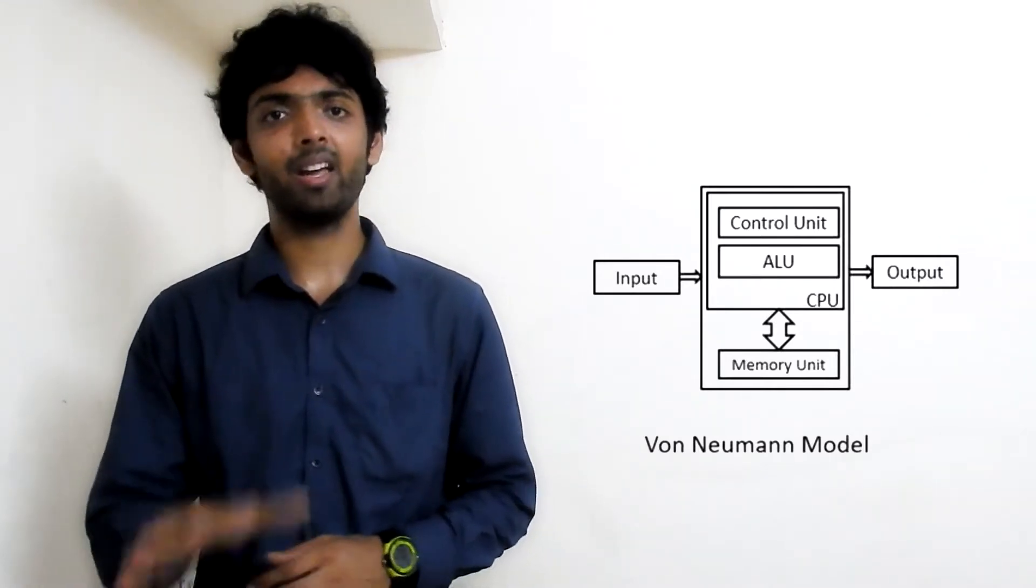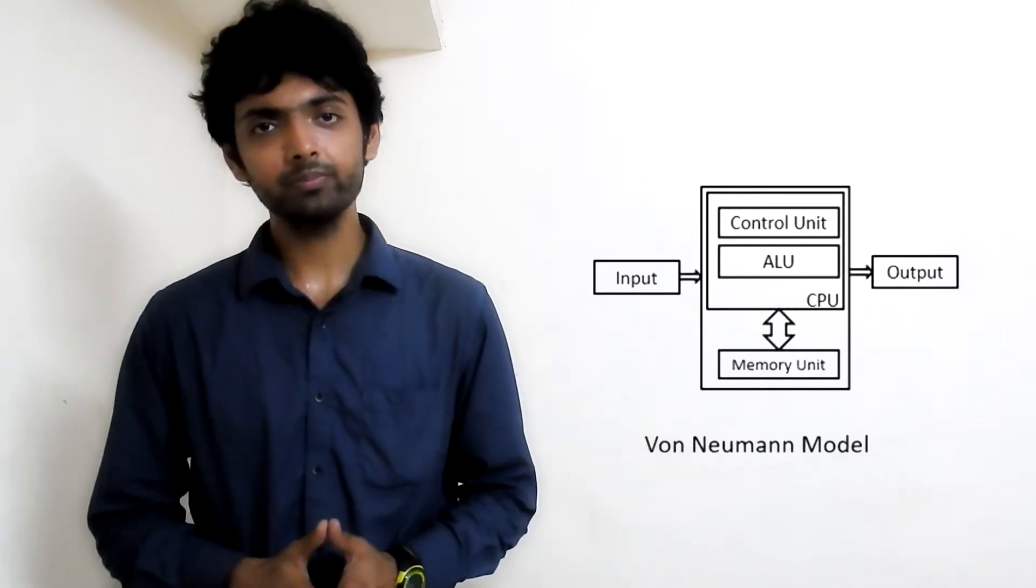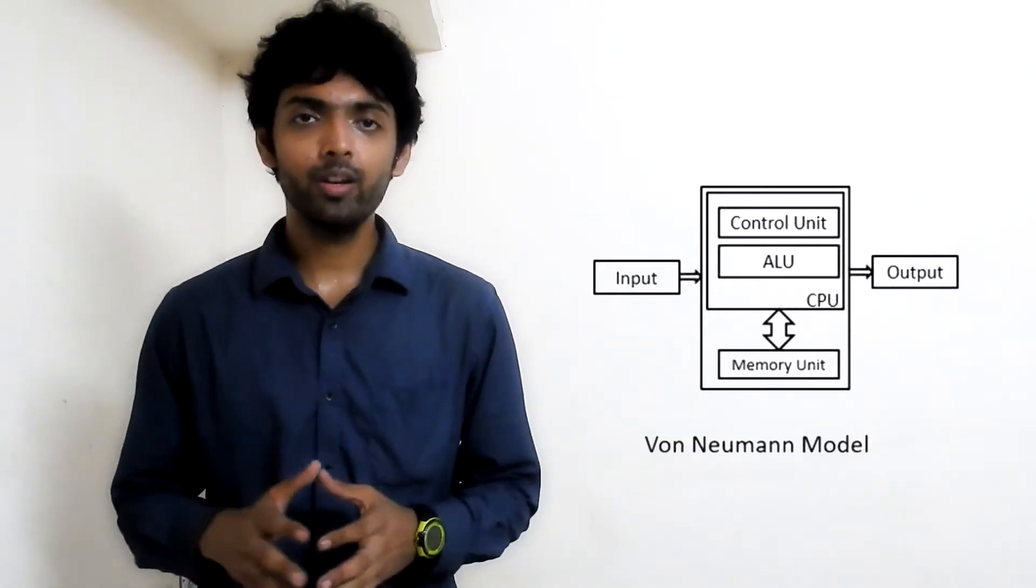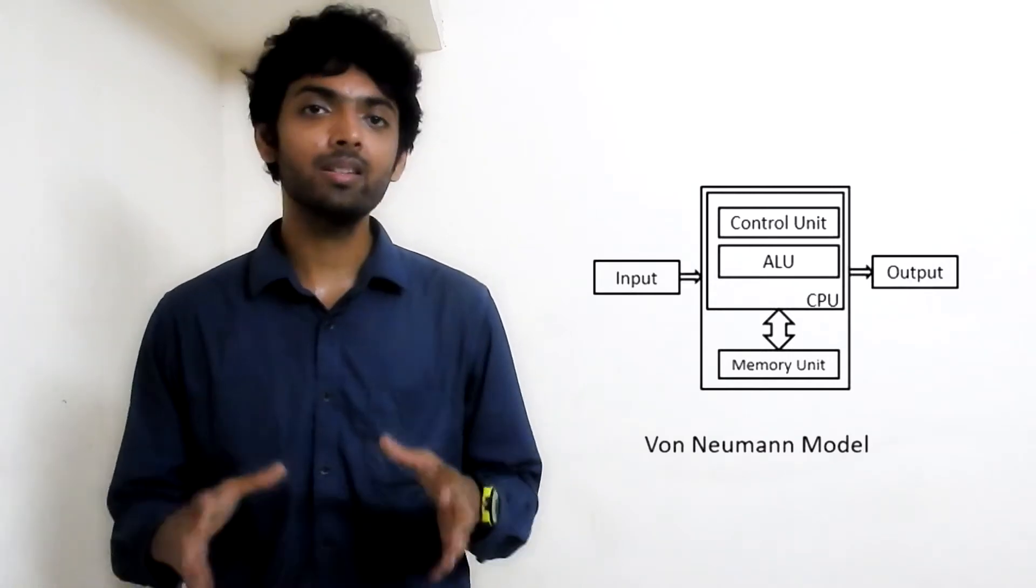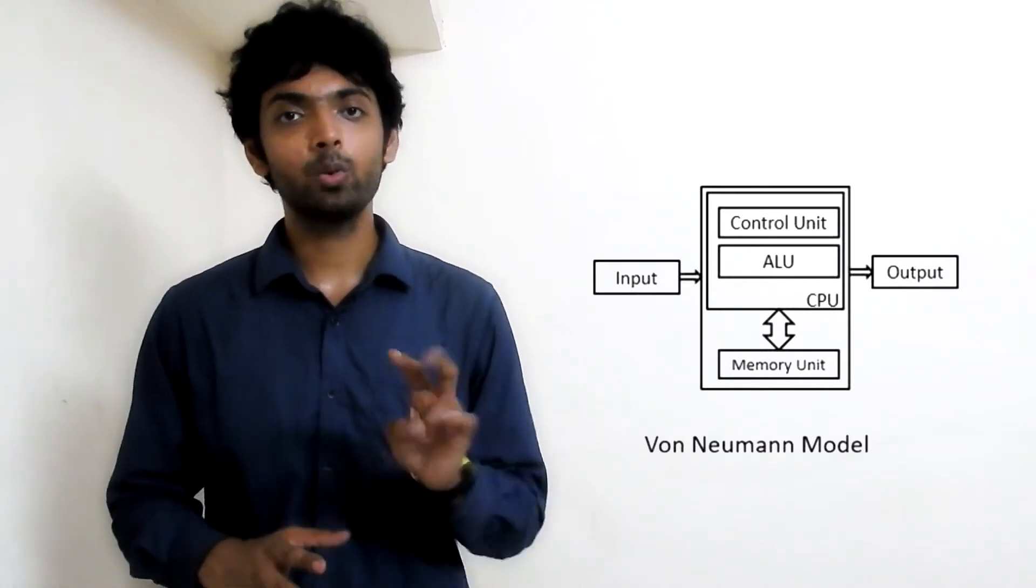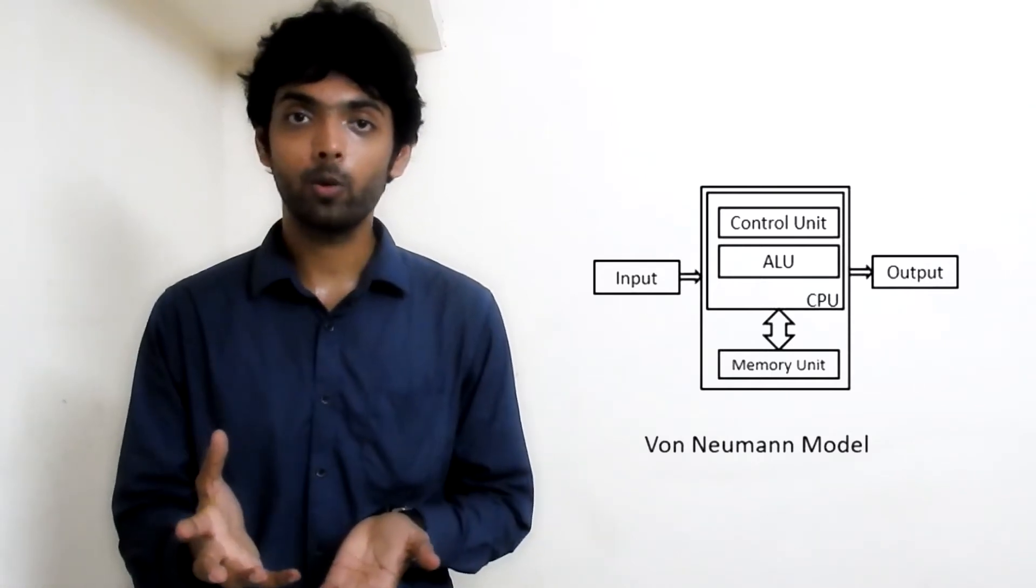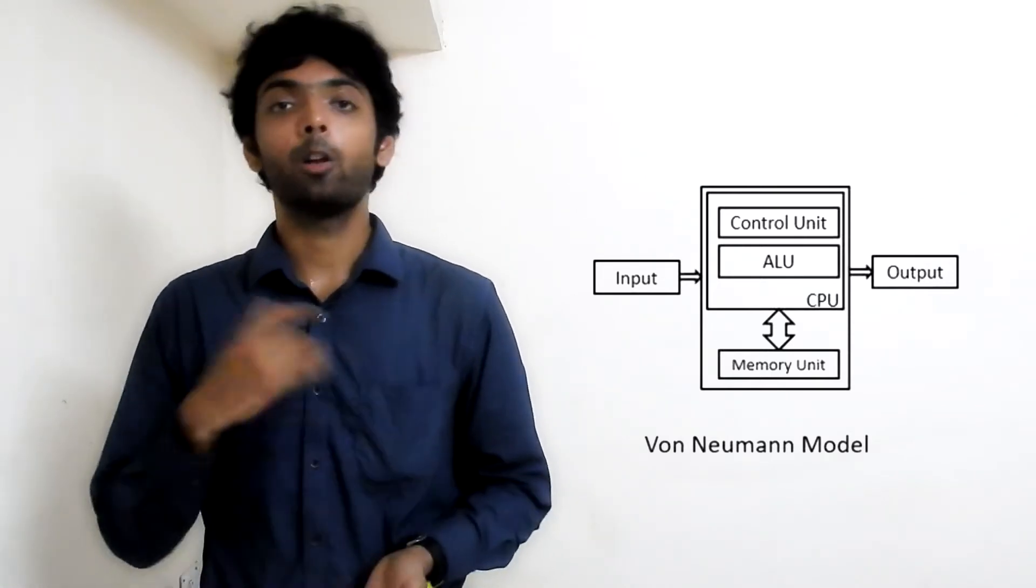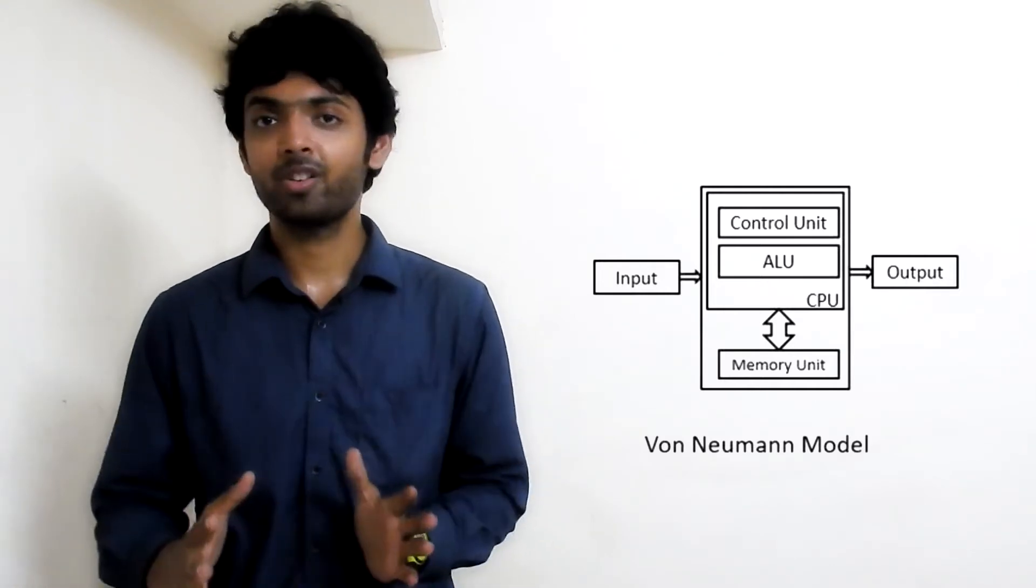The CPU has a control unit, it has an ALU, and it has a memory unit together combined. In this architecture, the memory has two types of data: the program that we wrote is there in the memory, and also the data supporting the program is in the memory. It is not differentiated at all.